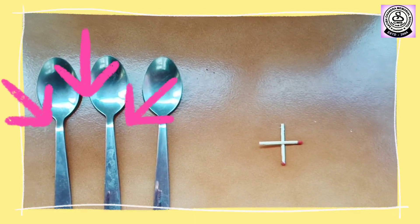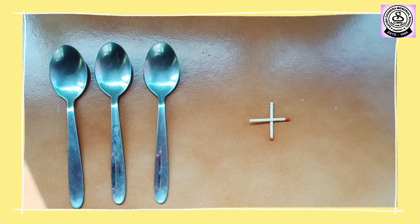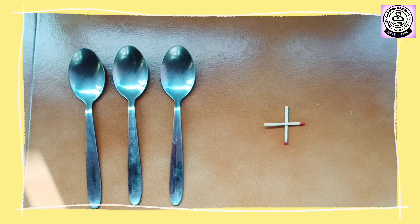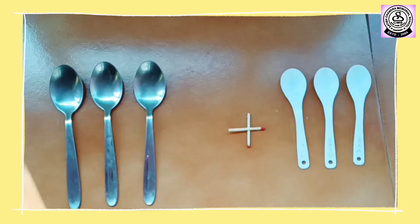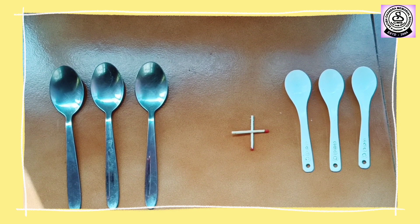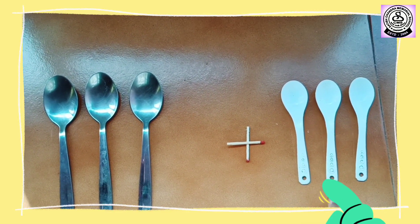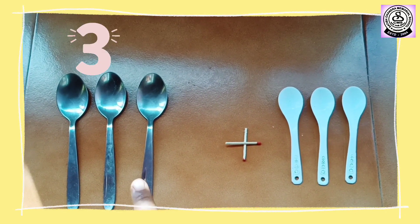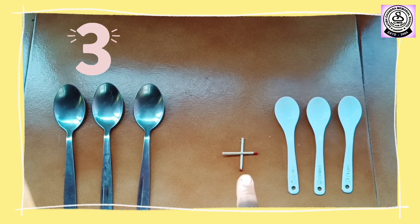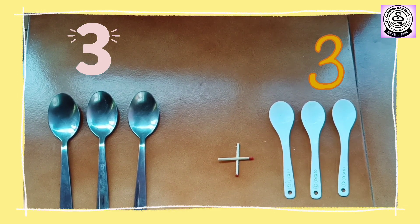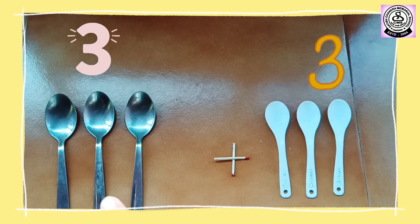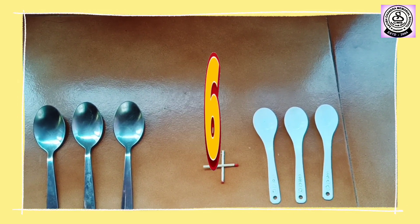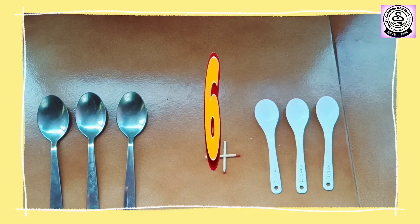So these are all steel spoons. How many spoons can you see here? 1, 2, 3. 3 steel spoons. If we add more plastic spoons here, we have 1, 2, 3. 3 plastic spoons. So 3 steel spoons plus 3 plastic spoons equals to how many spoons? So 3, 4, 5, 6. So in total we have 6 spoons here.